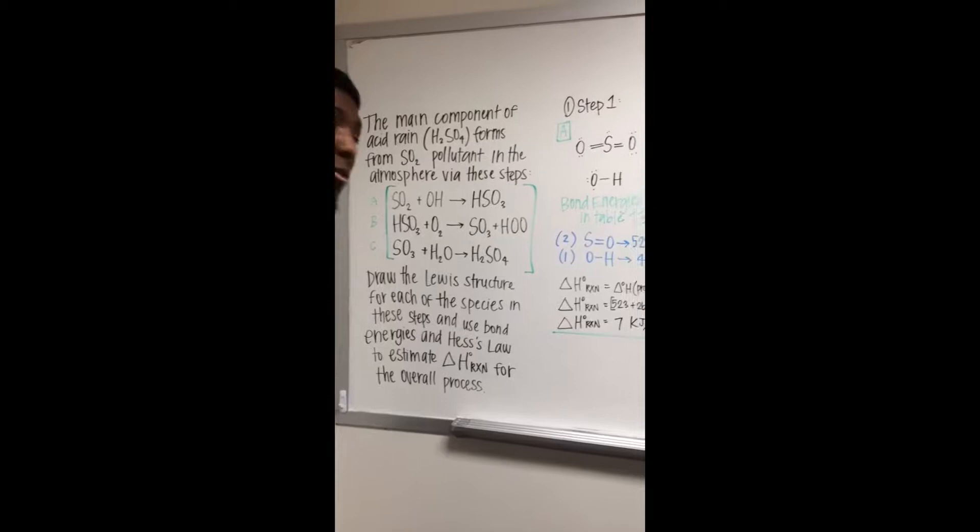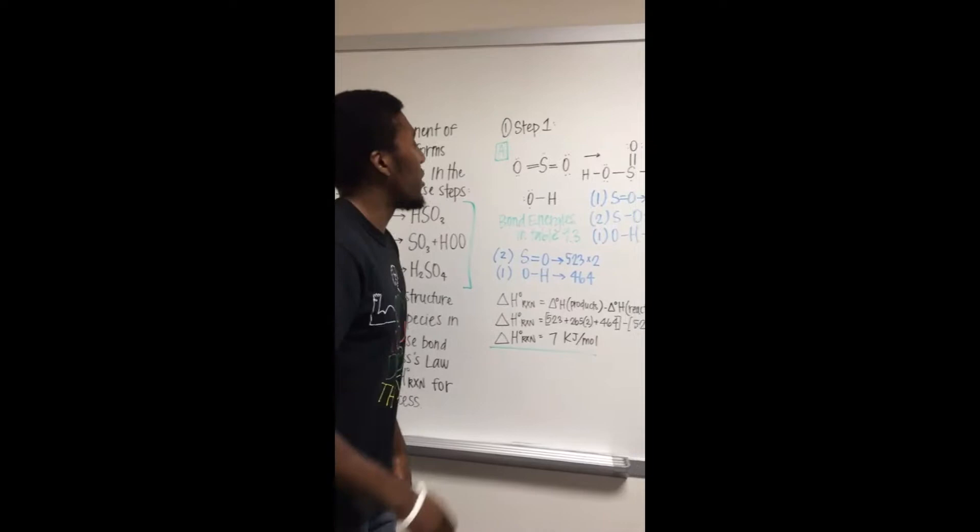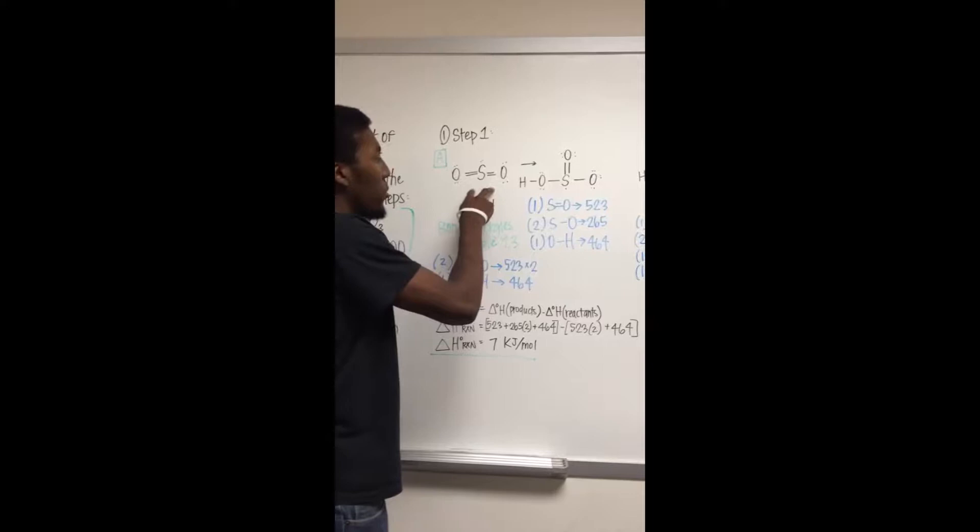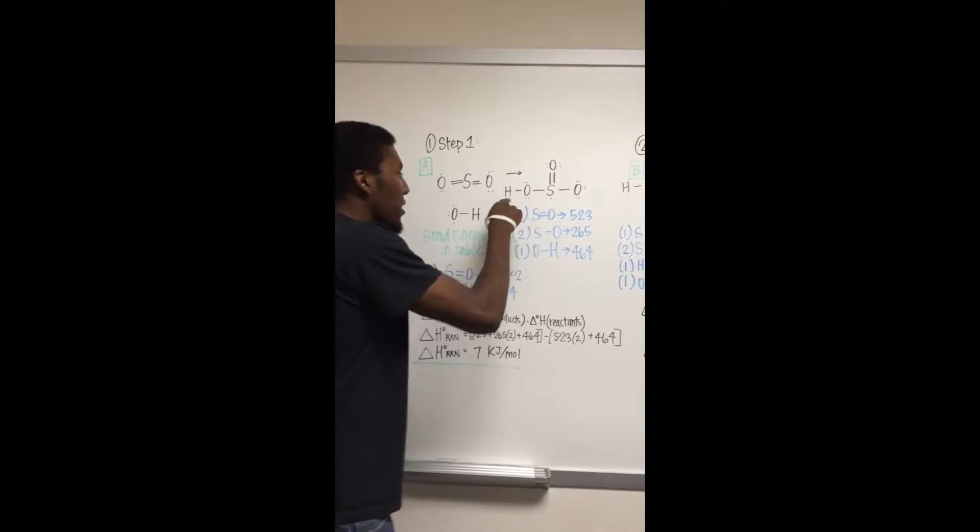Alright, so our first step is to write out the Lewis dot for the first reaction, SO2 plus OH to HSO3. Our Lewis dot for SO2 is S with two double bonds to O, our OH is just a single bond, and our HSO3, S is a double bond to O, we got two single bonds to O, and we have an OH thing.